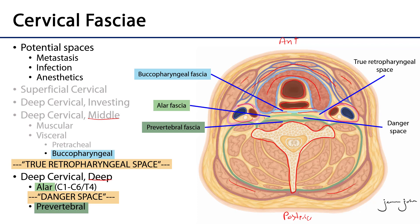Posterior to the buccopharyngeal fascia, we have some of the deep layers of the deep cervical fascia — the alar fascia, which is this light green layer here. The alar fascia runs between the transverse processes of the cervical vertebrae. Then we have the prevertebral fascia, which is much more extensive, surrounding the vertebrae throughout the neck. I want us to focus on just this anterior portion — it invests not just the vertebral column but also the deep muscles of the neck.